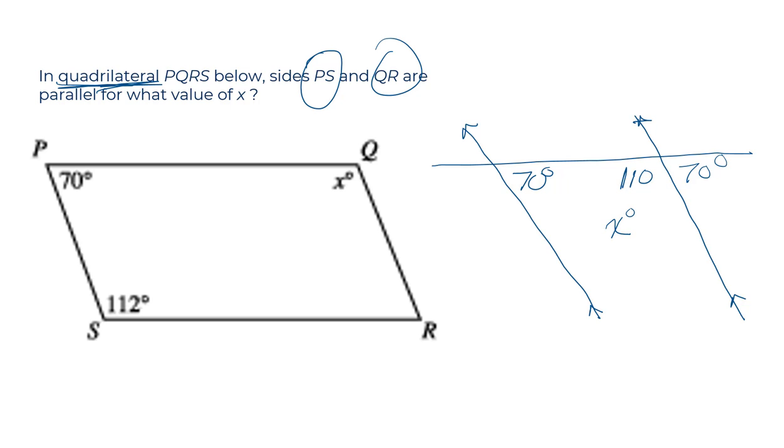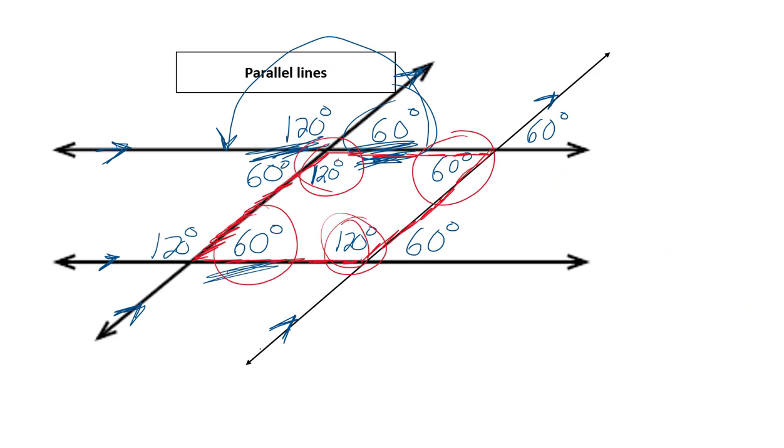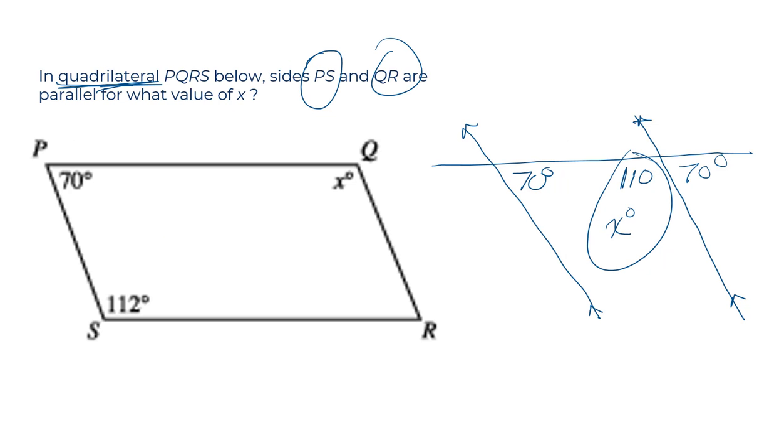So the answer here, X degrees, X would equal 110. So this question, a little tricky. It was worth going over parallel lines here, whether the lines PQ and SR are parallel is actually irrelevant. All we're interested in are PS and QR.